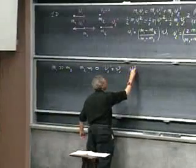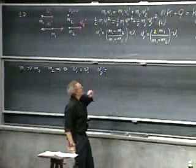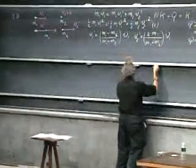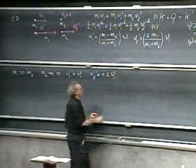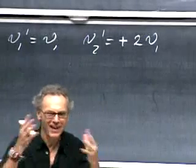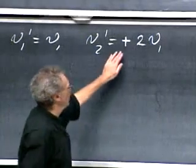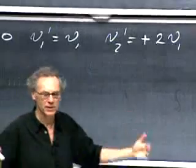What is V2 prime? That is not so intuitive. If you substitute M2 equals zero, you get plus 2V1 — not obvious at all. So the ping-pong ball gets a velocity of 2V1, and the bowling ball continues at the same speed. I'll do a demonstration so you can see that it really happens.